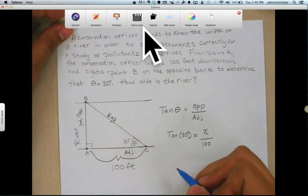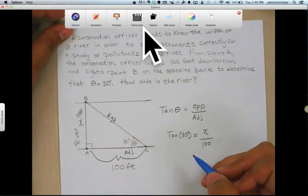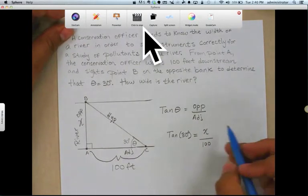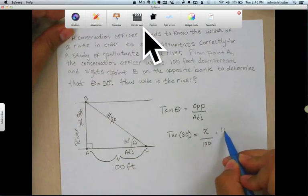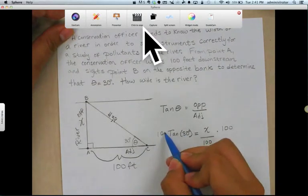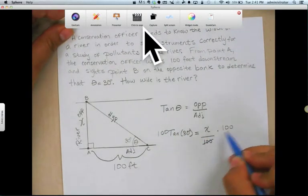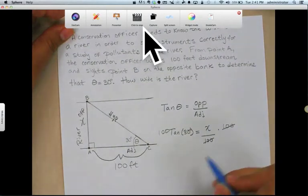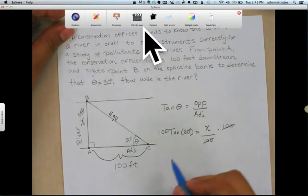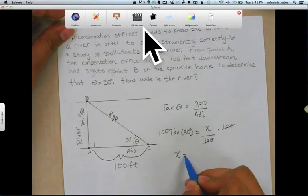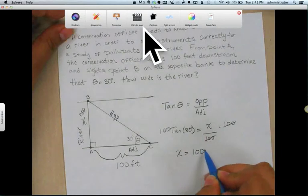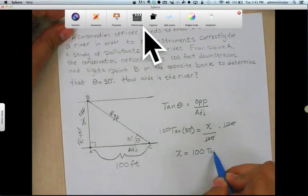Really simple equation that I can solve. So what I do in this case is I will multiply both sides by 100 so that I get rid of the 100 in the denominator. And I have X equal to 100 tangent of 30 degrees.